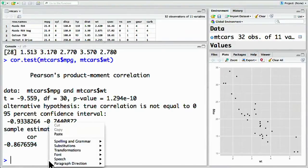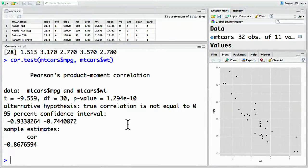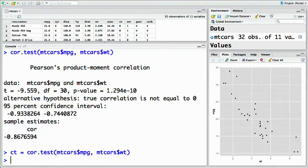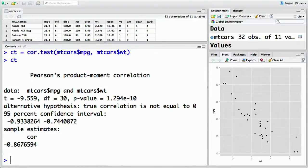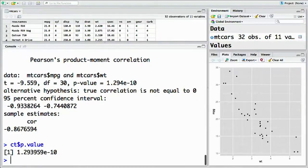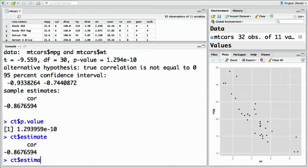These values can be extracted individually from a correlation test just like they could from the t-test by using the dollar sign. For example, let's save correlation test into ct for correlation test equals. Now ct contains the entire correlation test. We can extract the p-value by doing ct dollar sign p dot value. Similarly, we can extract the estimate by doing ct dollar sign estimate. And, much like the t-test, we can get a confidence interval.